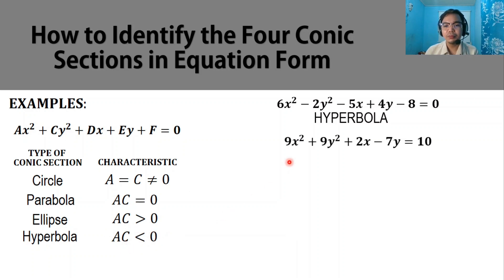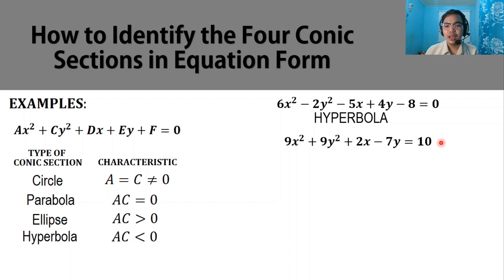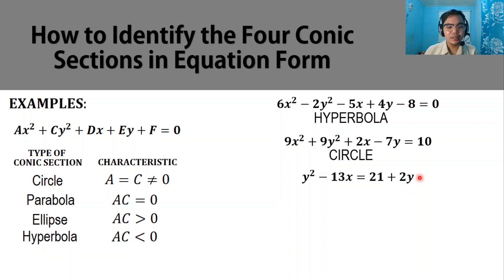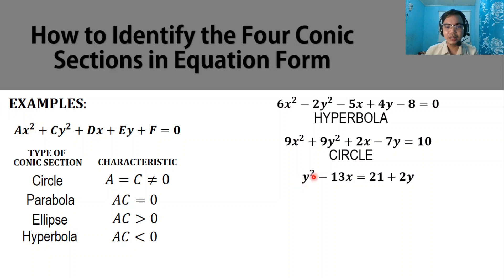Next example: 9x squared plus 9y squared plus 2x minus 7y equals 10. Examining a and c, they are both 9 and equal, so this equation is a circle. Next example: y squared minus 13x equals 21 plus 2y. There is no x squared term, so a equals 0, while c is 1 as the coefficient of y squared. Since 1 times 0 equals 0, the product ac equals 0, so this equation is a parabola.